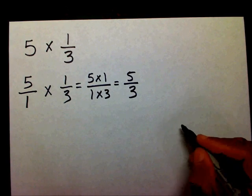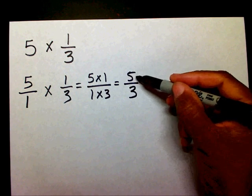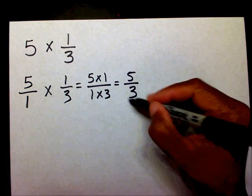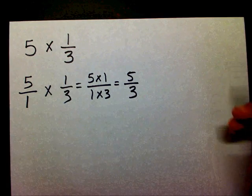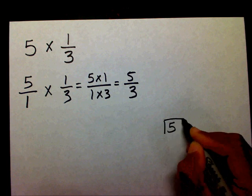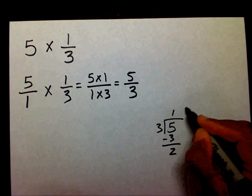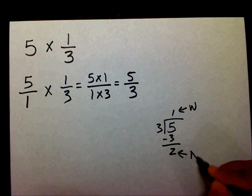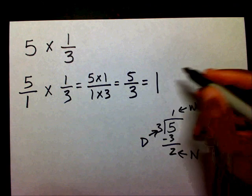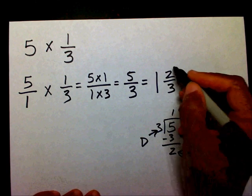I need to change this improper fraction. The reason why it's improper is because the numerator is larger than the denominator. Please watch the video on changing improper fractions into mixed numbers — I also have a video on mixed numbers into improper fractions. So we want to take 5 divided by 3. This is my whole number, this is my numerator, and this is my denominator. My answer is going to be 1 and 2 thirds, and I know this is already in lowest terms.